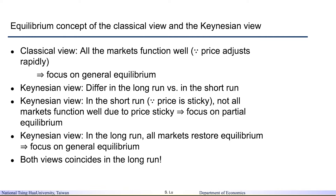Under the classical view, we are talking about general equilibrium because prices are flexible and can adjust rapidly, so all markets attain equilibrium quickly. Under the Keynesian view, we separate into short run and long run: in the short run we allow partial equilibrium, but in the long run we also assume the economy will attain general equilibrium. Therefore, under either view — classical or Keynesian — both views coincide in the long run, looking at general equilibrium. However, under the Keynesian view, some markets are allowed to be off equilibrium in the short run, and we look at partial equilibrium.